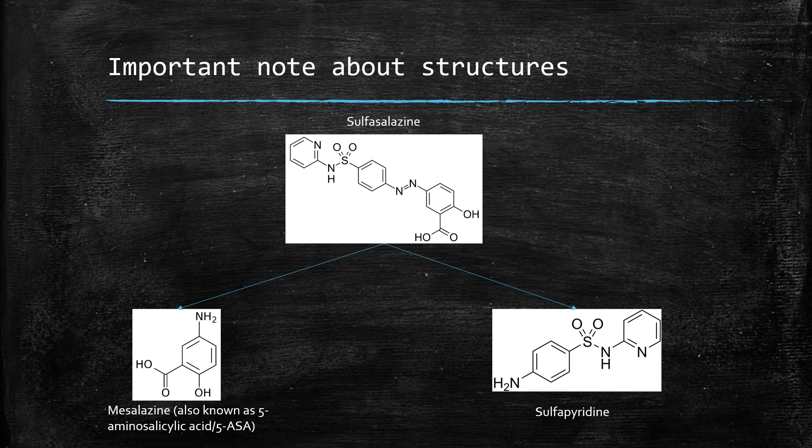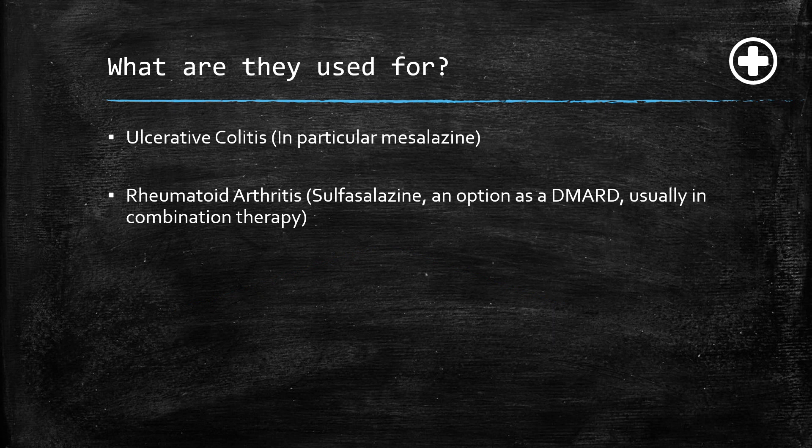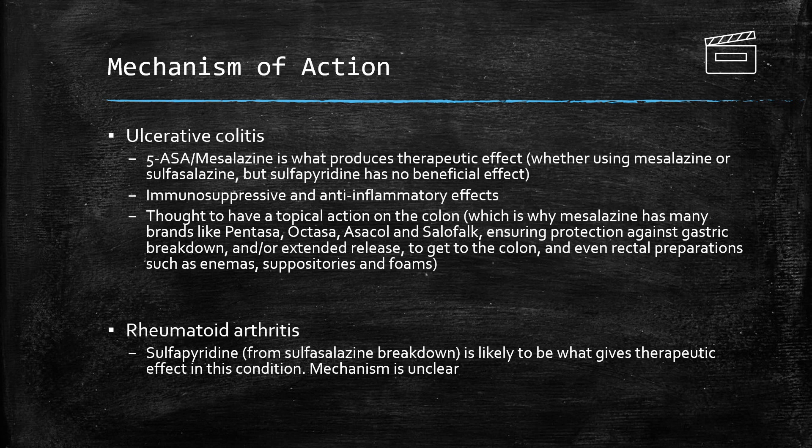It's important to mention the difference between sulfasalazine and mesalazine with regards to ulcerative colitis versus rheumatoid arthritis. Aminosalicylates are used for ulcerative colitis — in particular mesalazine — and rheumatoid arthritis — in particular sulfasalazine.